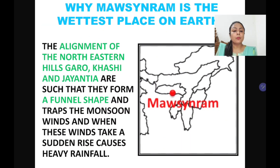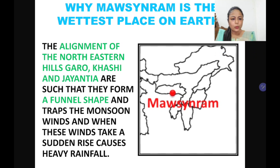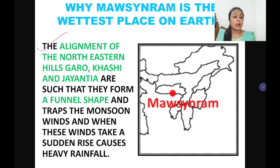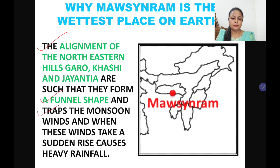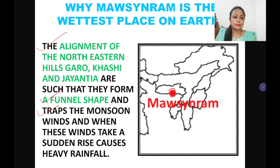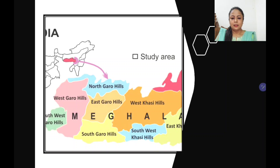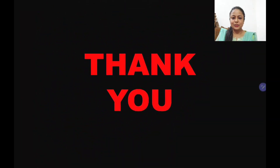Another key question: why is Mawsynram the wettest place on Earth? The alignment of the northeastern hills — Garo, Khasi, Jaintia, Lusai, Neezo, and others — forms a funnel shape and traps the monsoon wind. When these winds take a sudden rise, they cause very heavy rainfall. That is all about the rainy season in India. Thank you very much.